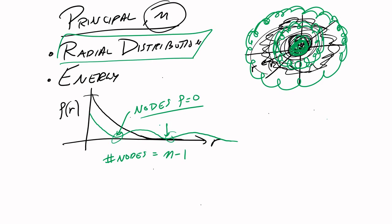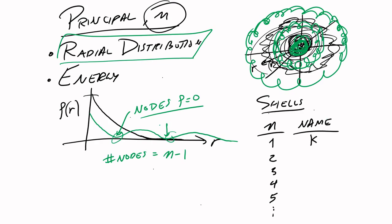These shells are sometimes named using capital letters: N = 1, 2, 3, 4, 5 correspond to K, L, M, N, O, and so on. A person may say something like 'copper K-alpha radiation,' and you'll hear this with respect to X-rays. This K is in reference to the shell.